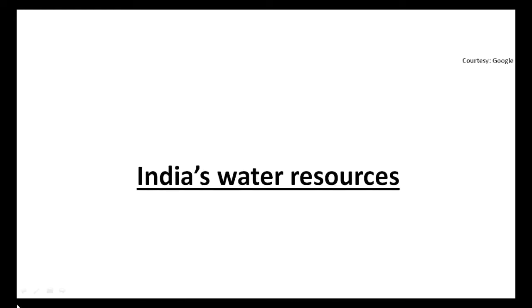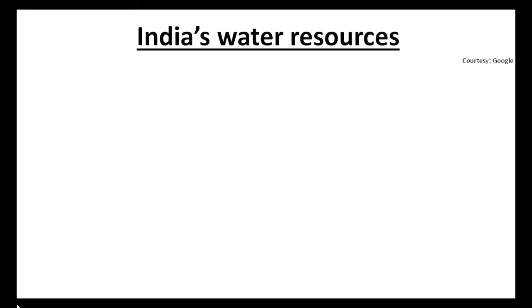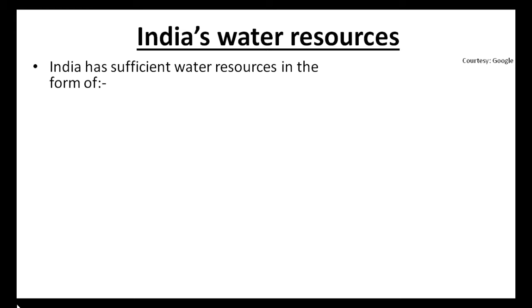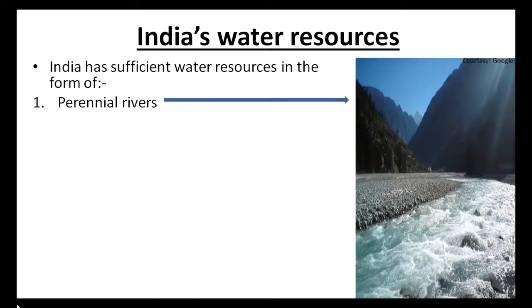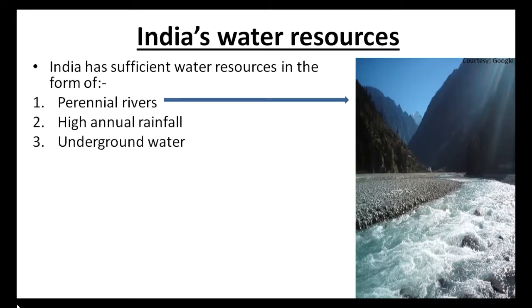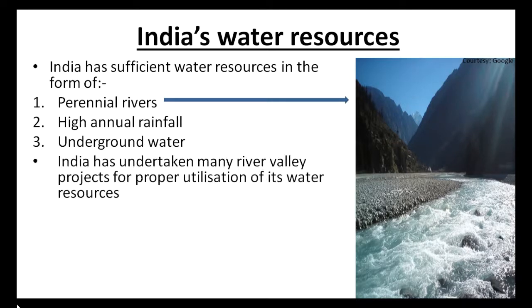India has sufficient water resources in the form of perennial rivers, which are permanent rivers, high annual rainfall, and underground water. India has undertaken many river valley projects for proper utilization of its water resources.